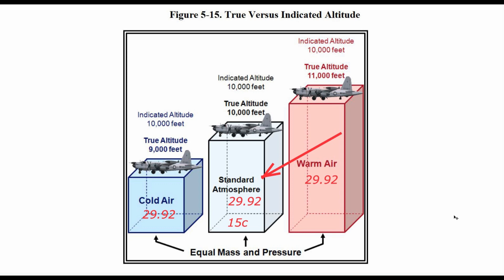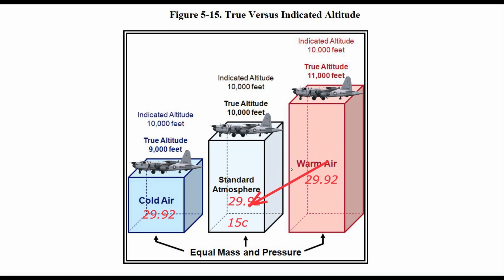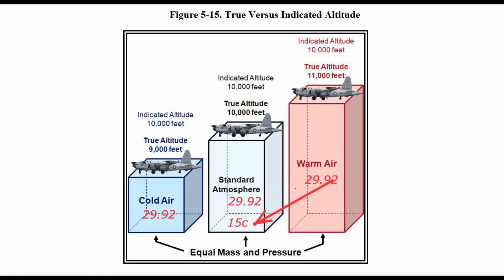In section 5 of this weather advisory we have figure 5-15, a good visual of how temperature affects the altimeter, showing the difference between true altitude and indicated altitude. We have three blocks of air each with the same mass — the same number of air molecules — all at standard air pressure of 29.92 and a temperature of 15°C.